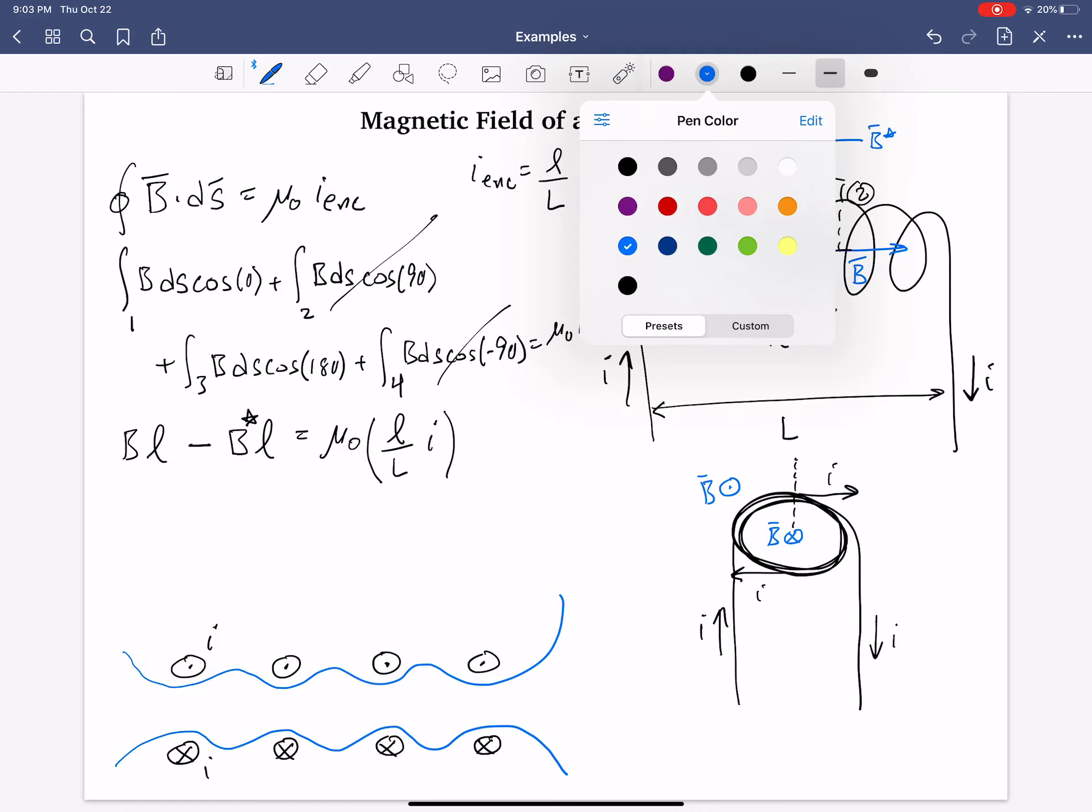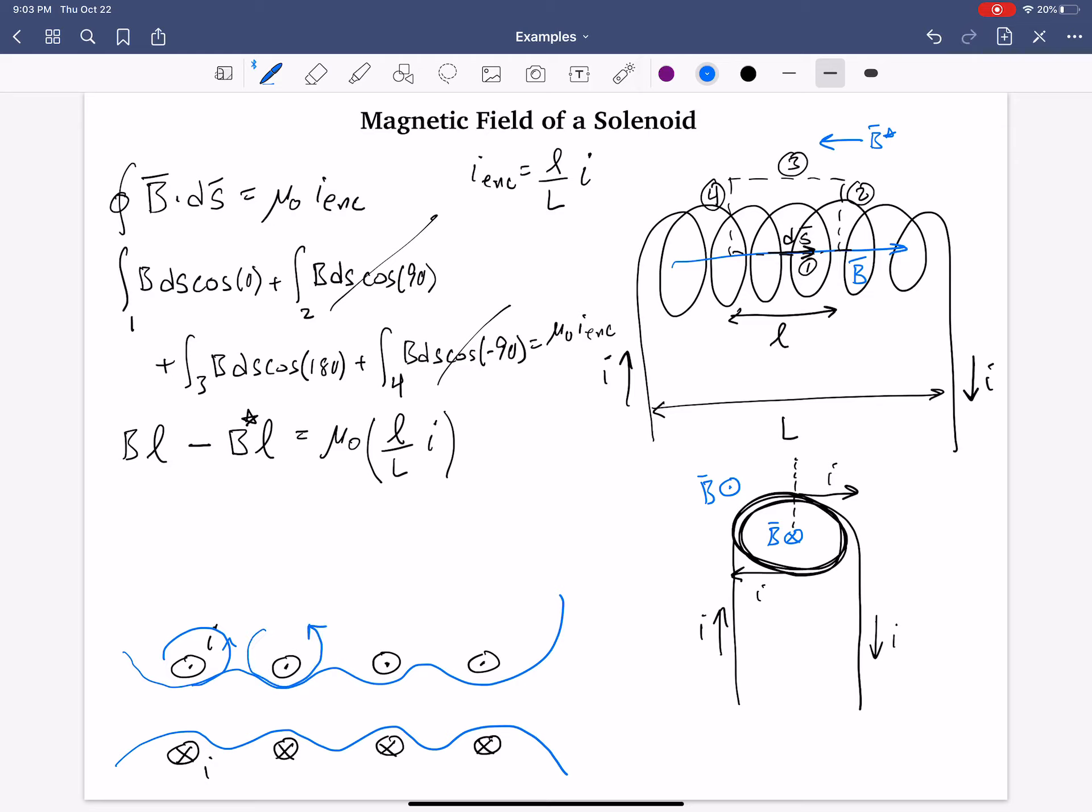And so what happens is that, in blue, is that this wire should go like this. Right? Up like that. For the second wire, it should go down. The same way. Right? That same way. And so, in between, they effectively cancel out.